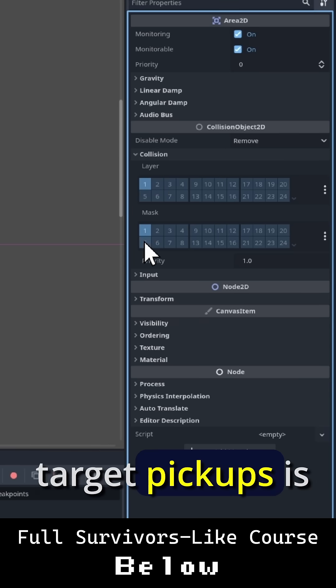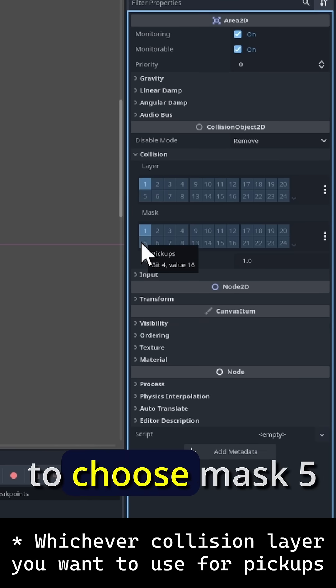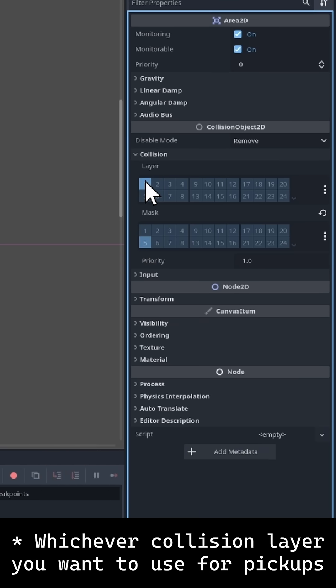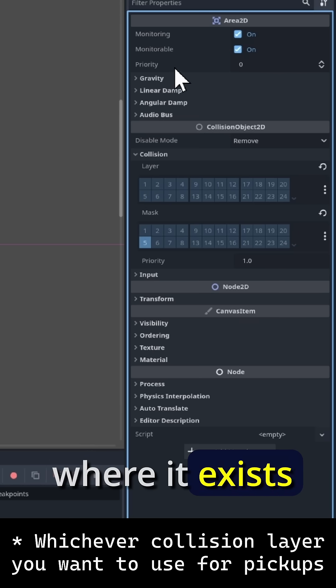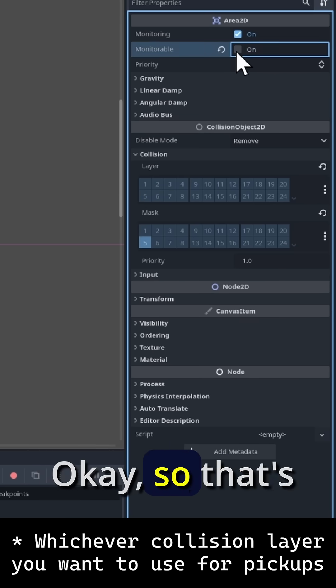All you have to do to make it target pickups is to choose mask 5 here for the pickups layer. And let's turn off layer 1 for where it exists on and make it monitoring only. Okay so that's our setup.